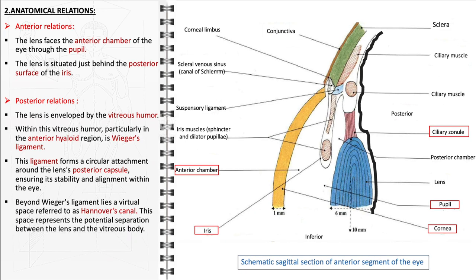Beyond Ouija's ligament, there exists a virtual space known as Hanover's canal. This space, though not a physical structure, represents the potential separation between the lens and the vitreous body.